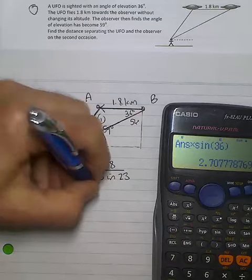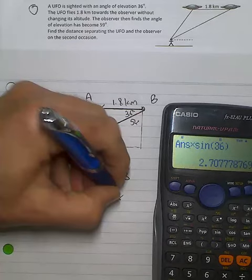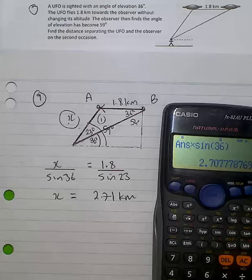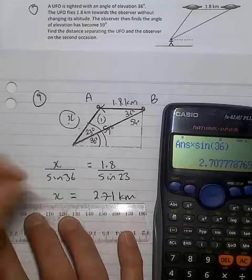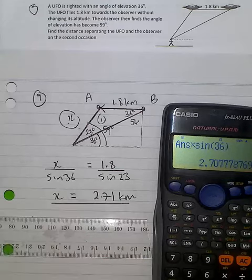So this distance is 2.71 kilometers at the second observation point or second observation in time I should say.